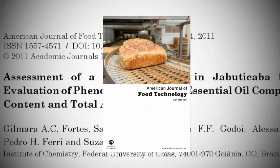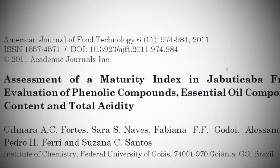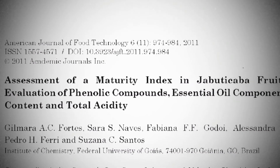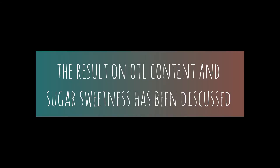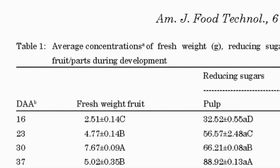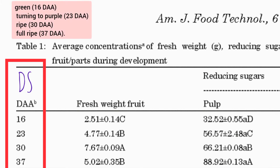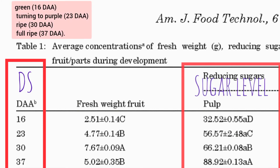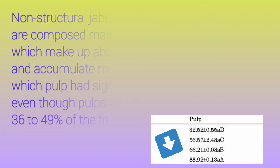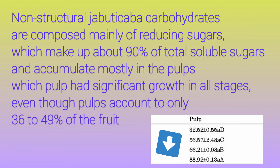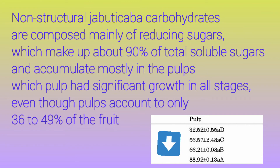From a referenced journal, the maturity index of jabuticaba fruit has been assessed. Results on oil content and sugar sweetness have been discussed. Four development stages were chosen and significant growth of pulp was measured. The non-structural carbohydrates of jabuticaba are composed mainly of reducing sugars, which make up about 90 percent of total soluble sugars.